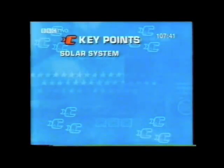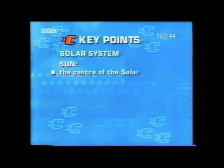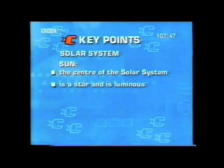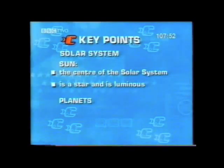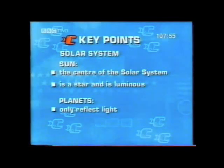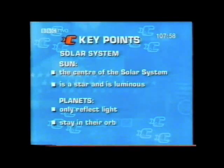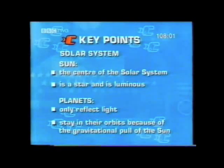The Sun is at the centre of the solar system. The Sun is a star — it gives out light, it is a light source, and we say that it is luminous. The planets do not give out light and we can only see them because they reflect light. All the planets stay in their orbits and don't fly off into space because of the gravitational pull of the Sun.